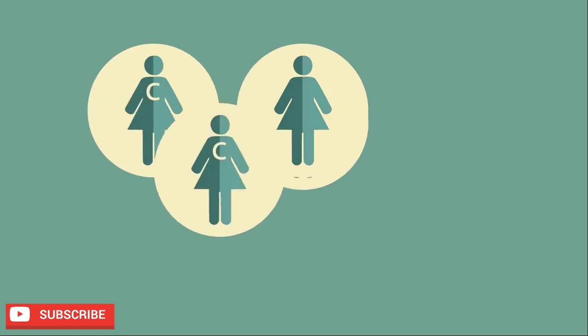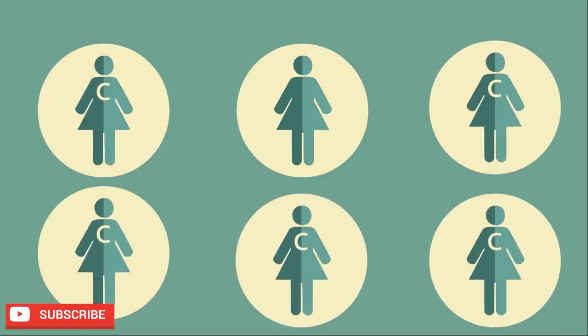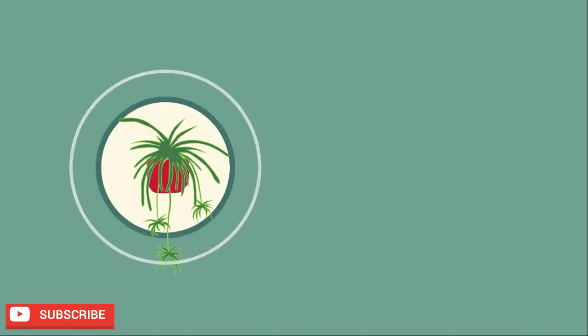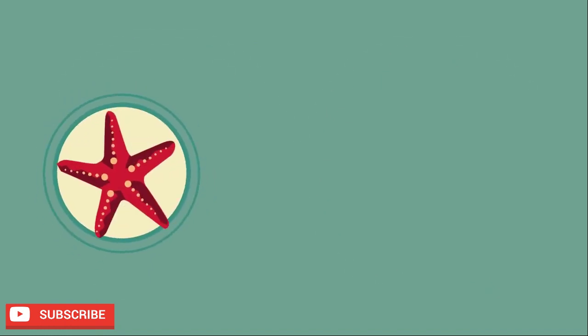So there we have asexual reproduction. It only requires one parent, meaning populations can grow very quickly, and everyone is a clone of one another. It is more commonly seen in plants and bacteria, but can also occur in simple animals like starfish, aphids, and hydra.